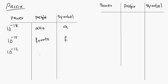10 to the negative 12 is Pico, symbol P. 10 to the negative 9 is Nano, symbol N.